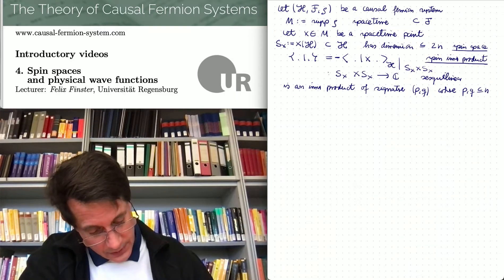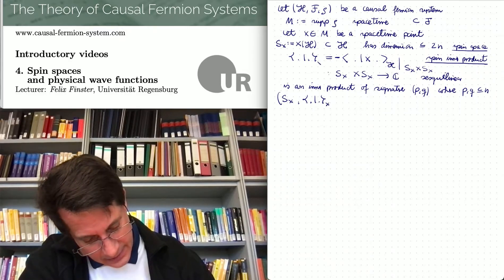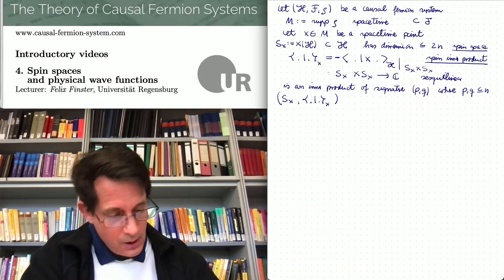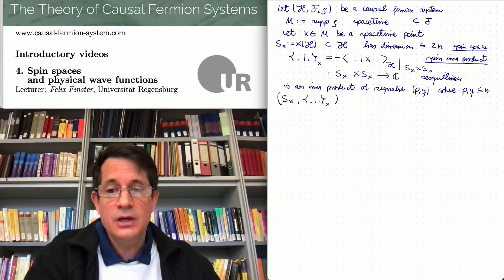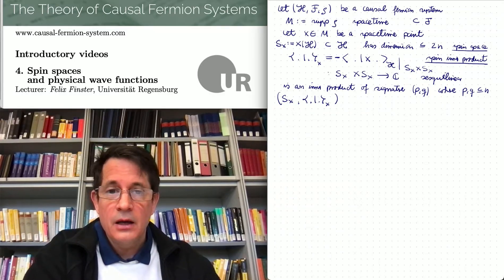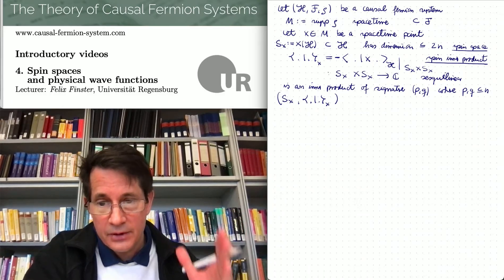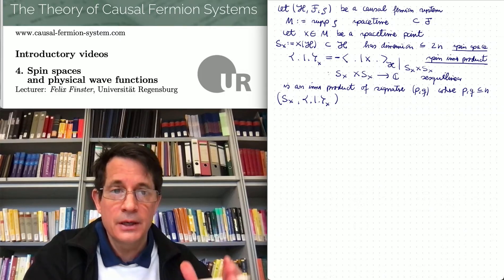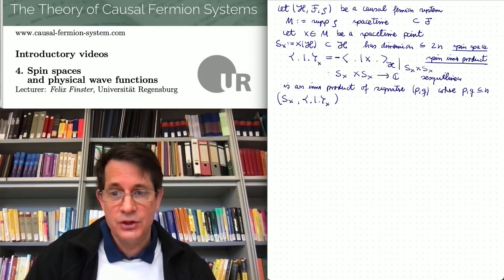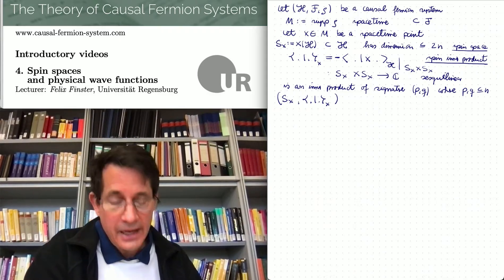The positive eigenvalues of x give rise to the positive signature, the negative eigenvalues give rise to the negative signature. The condition on the maximal number of eigenvalues tells us about the signature of this inner product. This inner product is what we call the spin inner product.